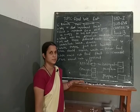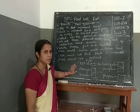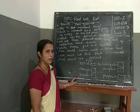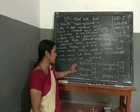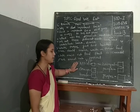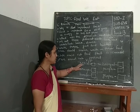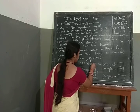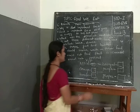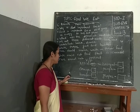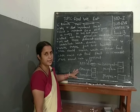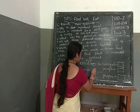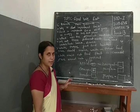Now I will ask you some extra questions. Write V for vegetable and F for fruit. First tell me, apple — is apple a fruit or vegetable? Apple is a fruit. Orange — is orange a fruit or vegetable? Orange is a fruit. So write F for fruit.